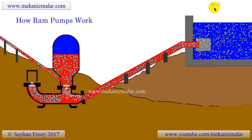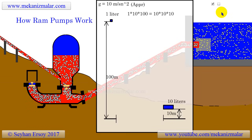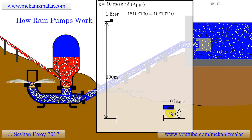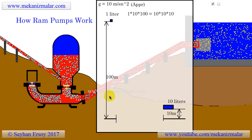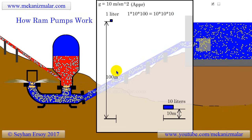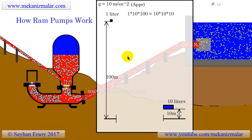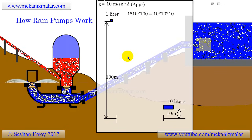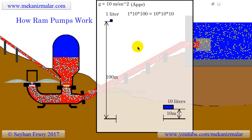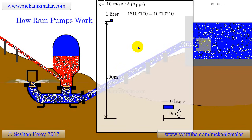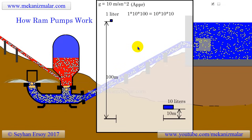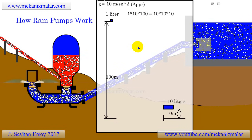To understand this concept, let's look at the following drawing. As you can see, 10 liters of water with a water head of 10 meters has the same potential energy as 1 liter of water with a water head of 100 meters. The potential energy for both is approximately 1 joule. Assuming 100% efficiency, a water flow of 10 liters per second at a 10-meter drop has enough potential energy to pump 1 liter of water per second up 100 meters.